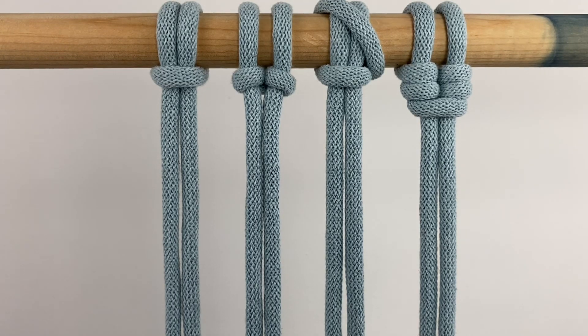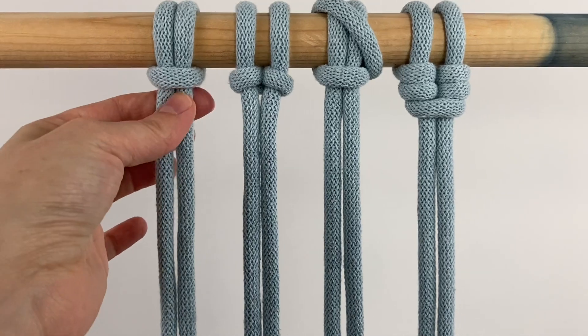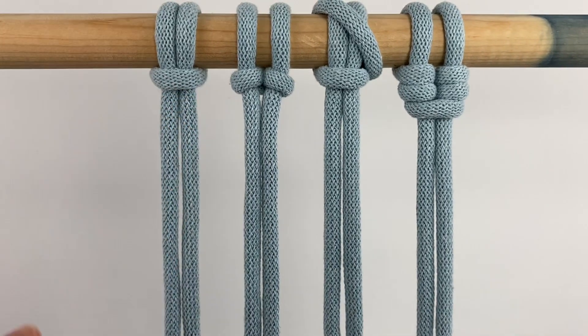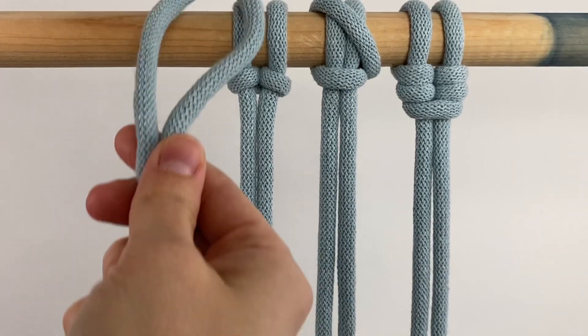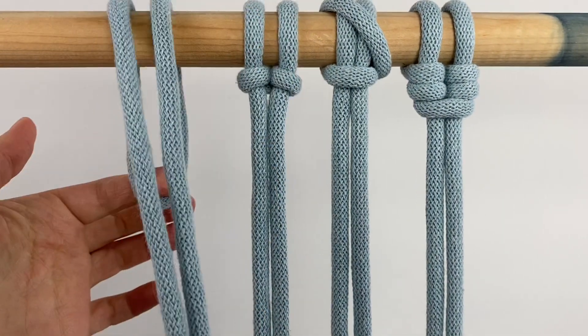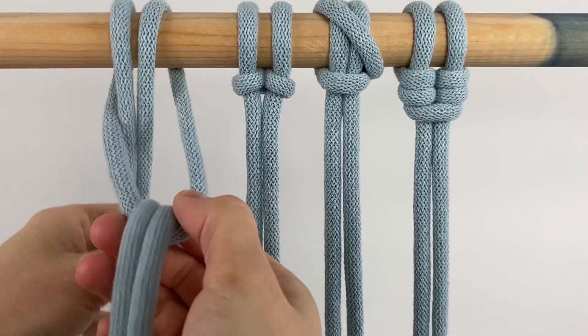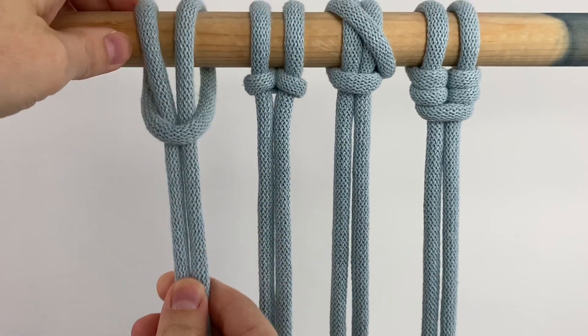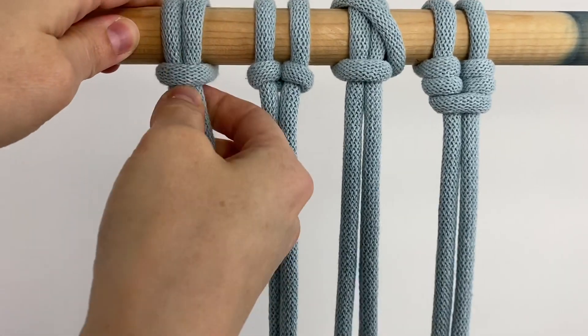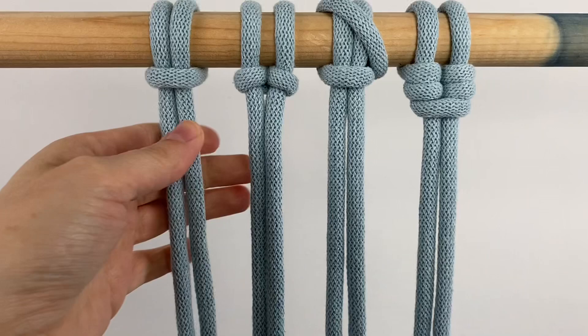So right here I have just a regular old larks head knot. Make your loop and you fold it over your dowel and just pull the ends through. It's super simple, it does the job, but maybe you want to try something different.